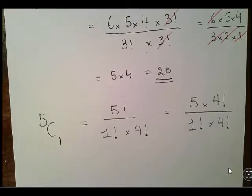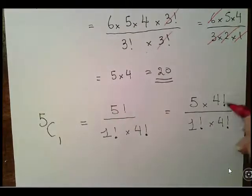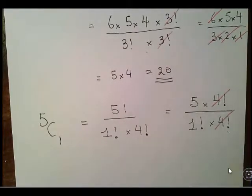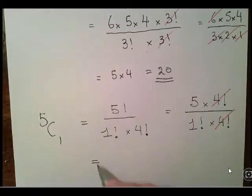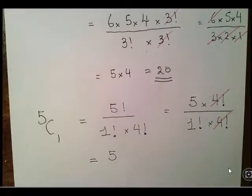This is very similar to the last exercise. The 4 factorials cancel out, and we are left with 5 over 1 factorial. 1 factorial is just 1, so the answer there is 5.